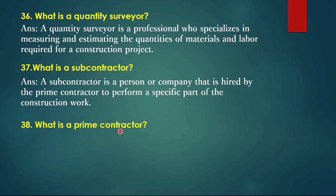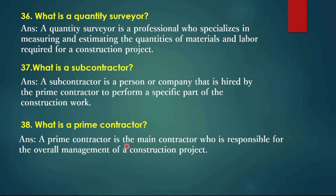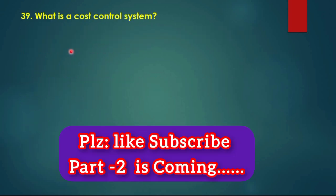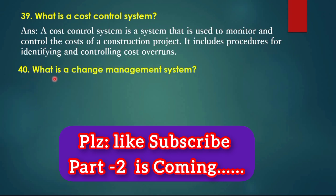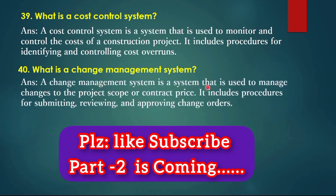Question 38: What is a prime contractor? A prime contractor is the main contractor responsible for the overall management of a construction project. Question 39: What is a cost control system? A cost control system is a system used to monitor and control the cost of a construction project. Question 40: What is a change management system? A change management system is a system used to manage changes to the project scope or contract price. It includes procedures for submitting, reviewing, and approving change orders.